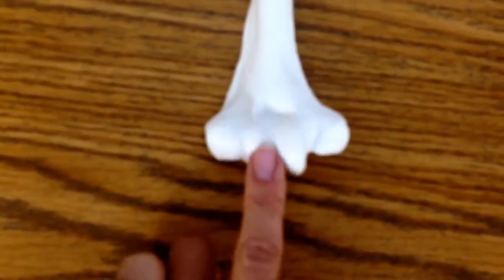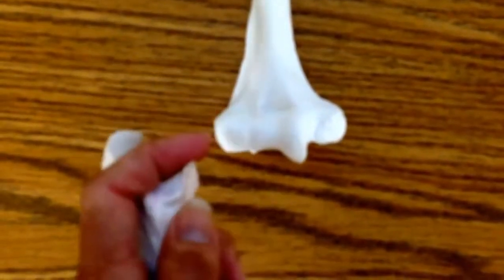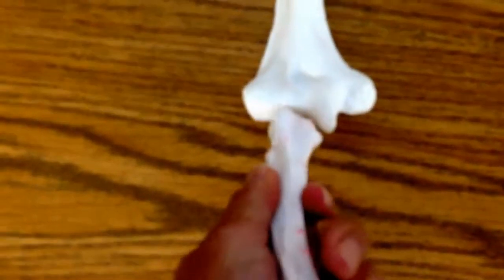The trochlea, the trochlea fits with the ulnar's trochlear notch, comes right in to here.